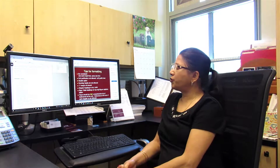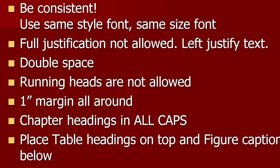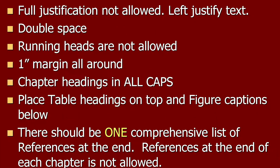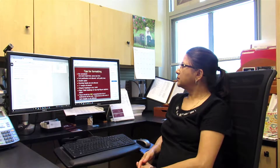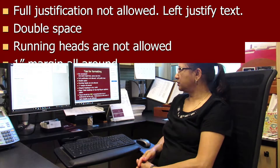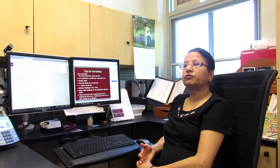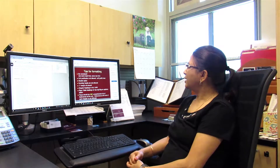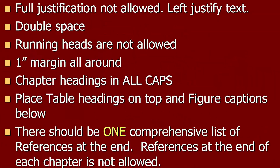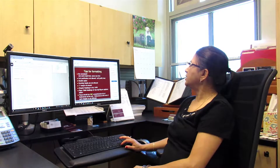Some formatting tips: be consistent — use the same style font and same size font throughout. Full justification is not allowed; make sure your text is left justified, meaning the right margin should be ragged. Double space the entire document. Running heads are not allowed. Use one-inch margins all around. Chapter headings must be in all caps — for example, 'CHAPTER ONE: INTRODUCTION' should be double spaced and in all caps. Place table headings on top and figure captions below. There should be one comprehensive list of references at the end — references at the end of each chapter are not allowed.